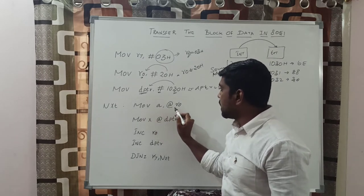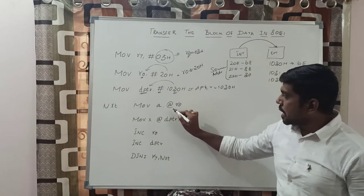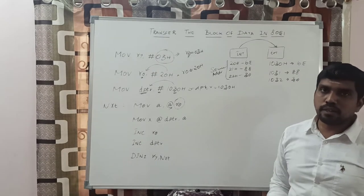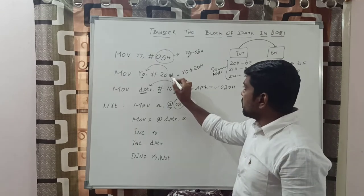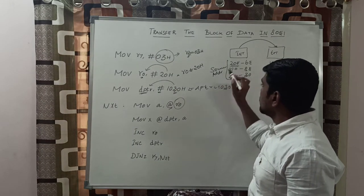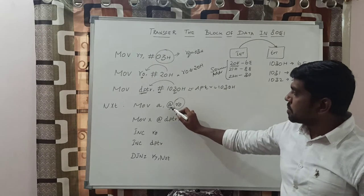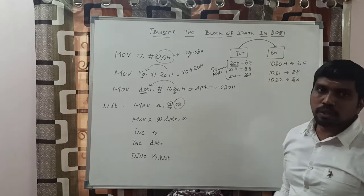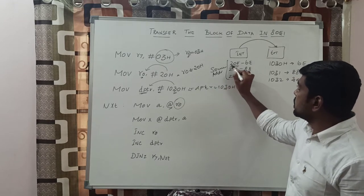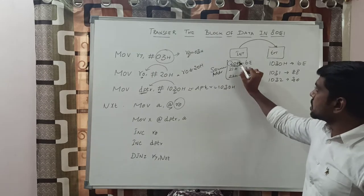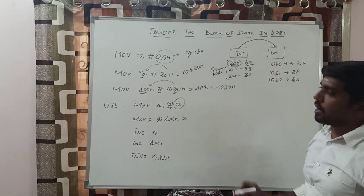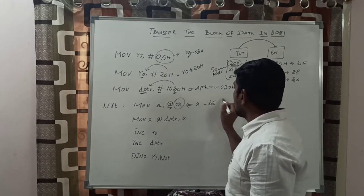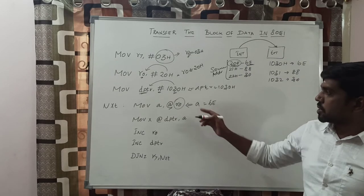The next instruction is MOV A, @R0. The '@' symbol represents an address location — this register holds the address, not the data. R0 value is 20h, which represents the address location. This instruction says whatever value is present at the address held in R0, that content is moved to the accumulator. In address 20h the data stored is 6Eh, so after execution the accumulator content is 6Eh.